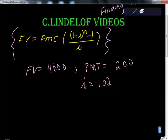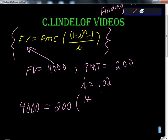So our future value is 4,000. I'm just going to put that there. 4,000 equals our payment of 200, times 1 plus 0.02 to the nth power minus 1, all over 0.02.